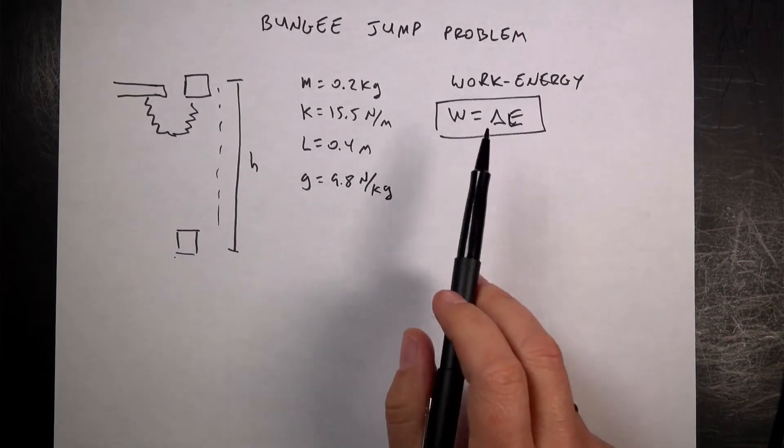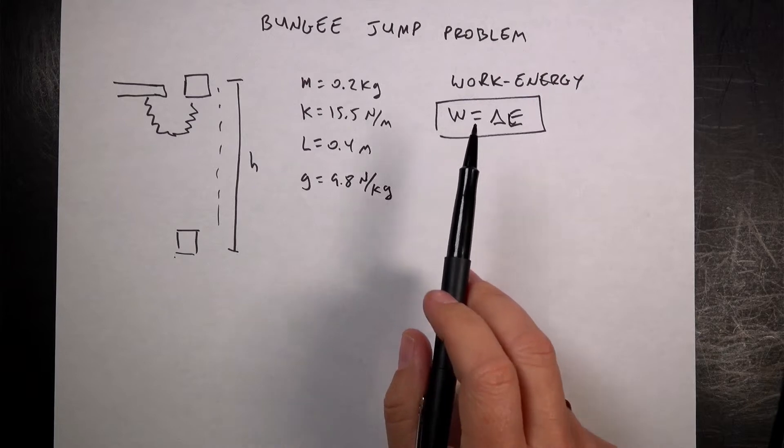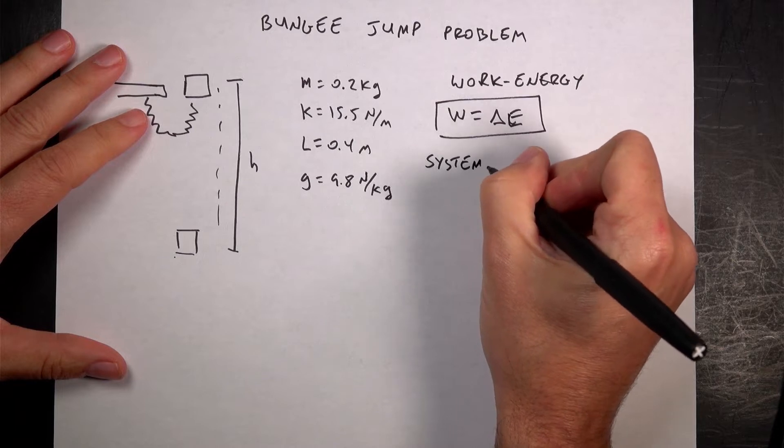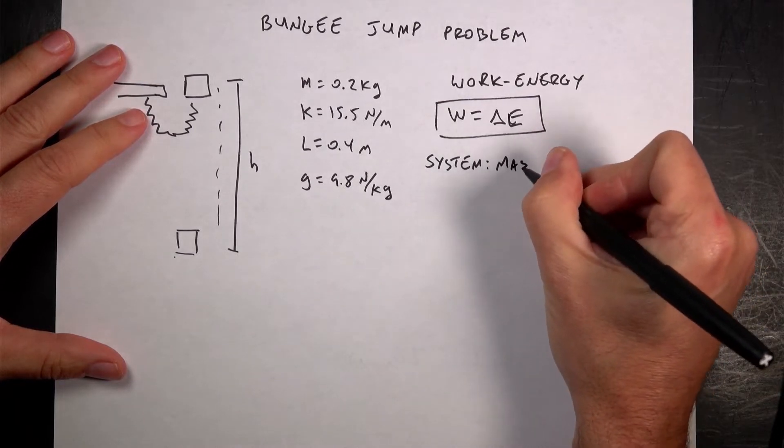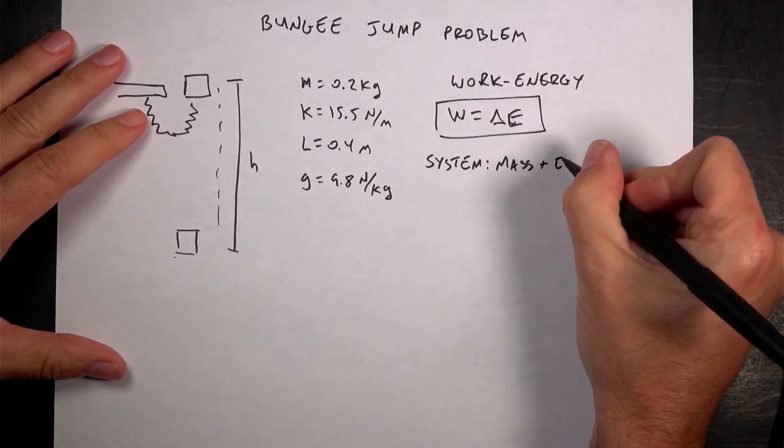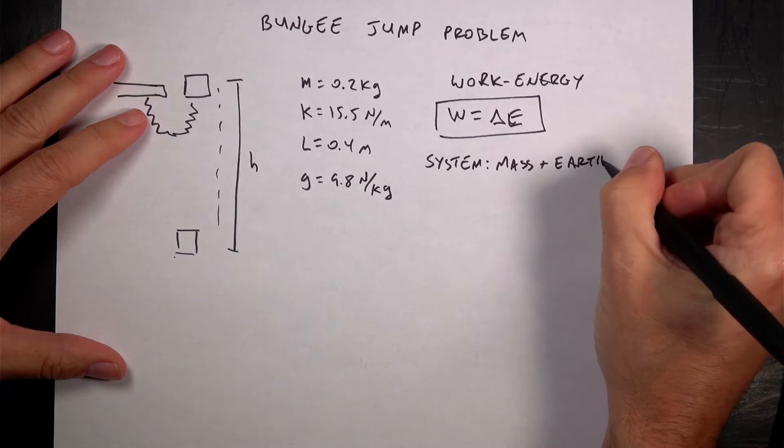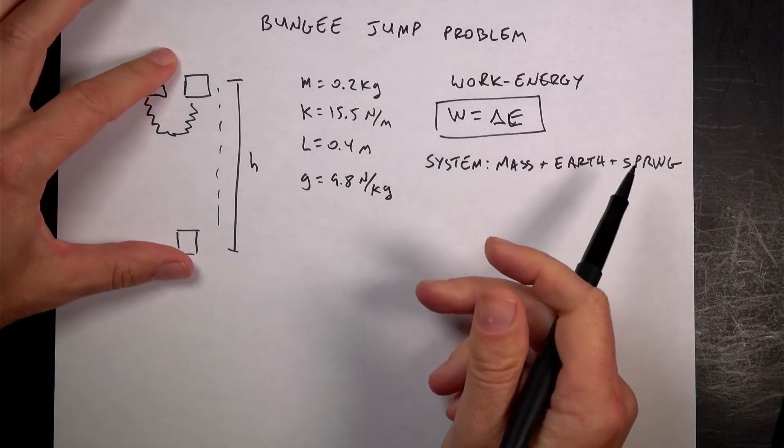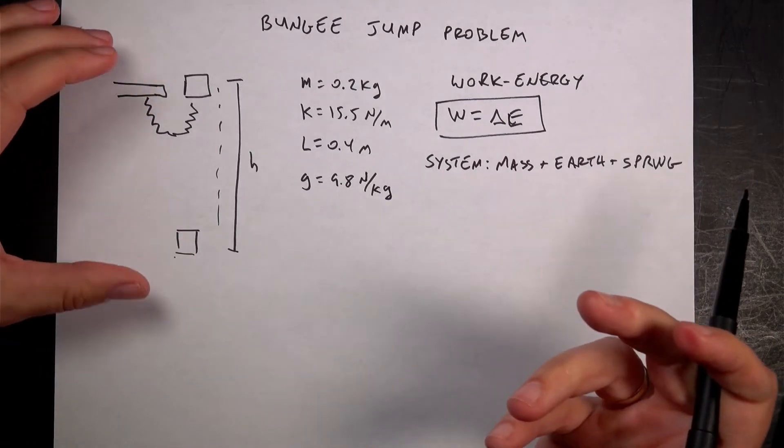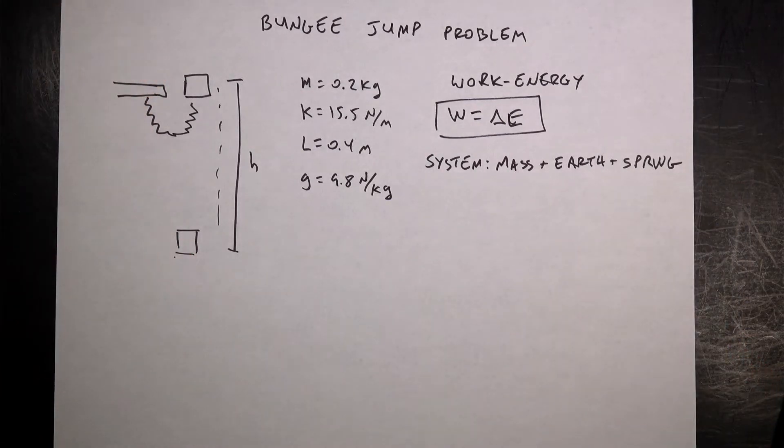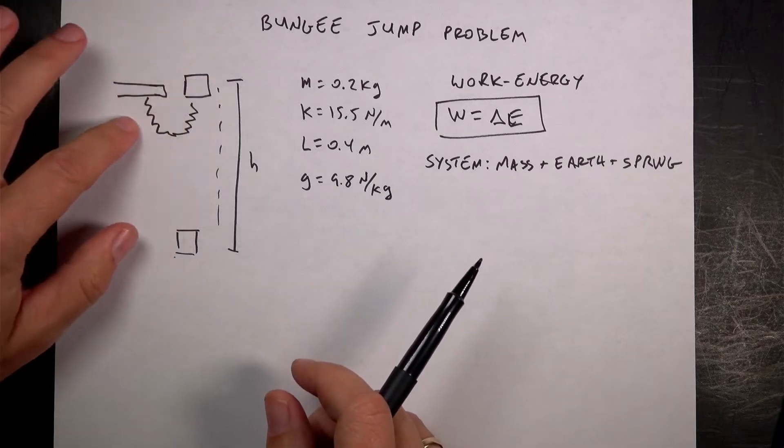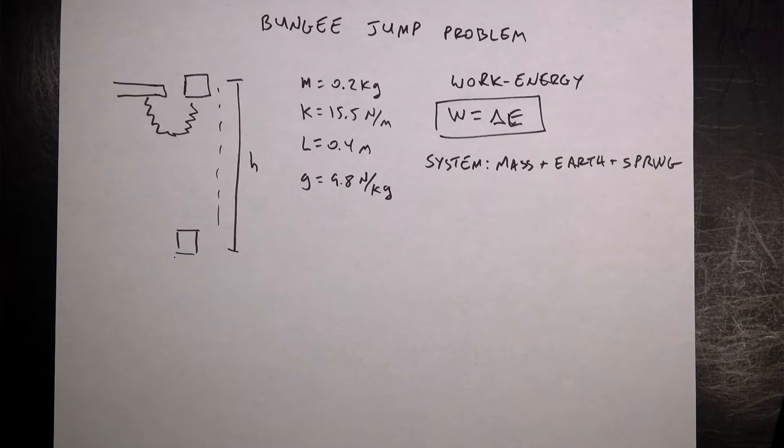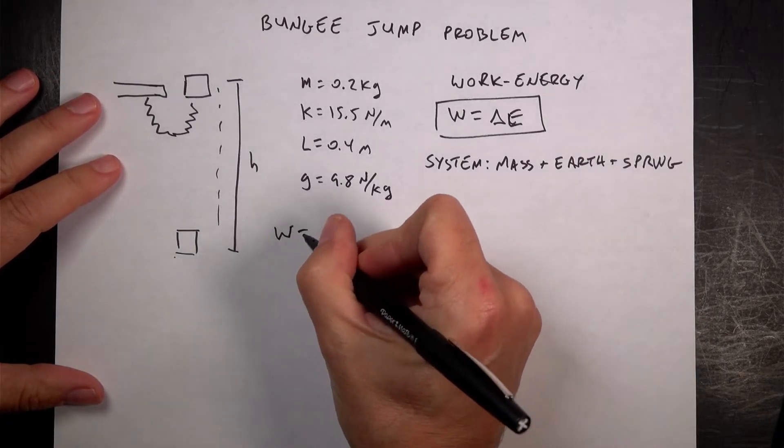I need to first describe or choose my system. Let's pick a system that has the mass plus the earth plus the spring. If that's the case, then what does work on my system? What adds energy to my system? The answer is nothing. There's obviously a spring force, but it's part of my system. There's obviously a gravitational force, but it's part of my system. In this case, the work is equal to zero.